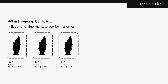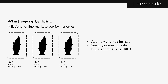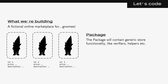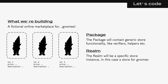Now that we've got that recap out of the way, we can look at what we're actually going to build today. The idea is to build an online marketplace for GNOMs. We're going to implement the bare minimum functionality: store owners can add new GNOMs for sale, users can see all the GNOMs with their prices and descriptions, and users can buy a GNOM using the native network currency. We'll divide functionality between a reusable package for generic store logic and a realm that contains the GNOM-specific inventory and order management.